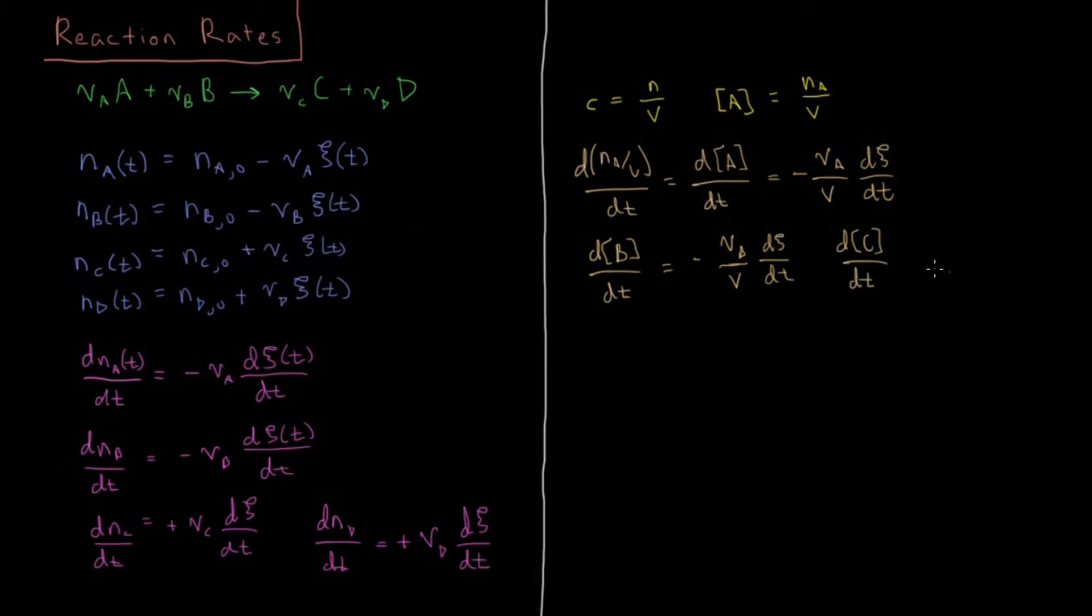The product C d[C]/dt is plus, again because that is a product, divided by volume. The volume is just the same for all four of them because they are in the same system. So they have the same total volume accessible to all of their particles at whatever concentration they're at. Nu D divided by volume, dC/dt.